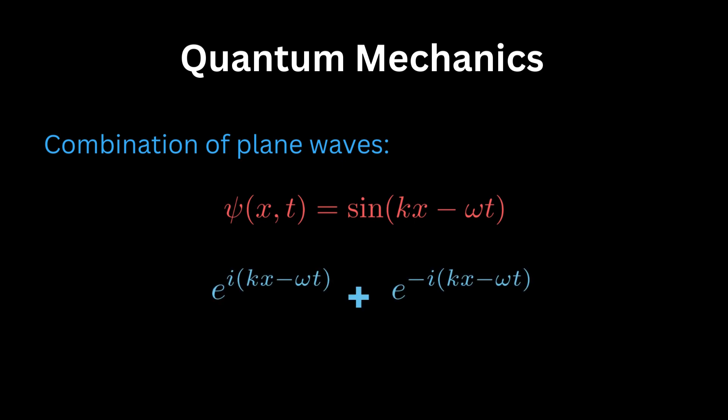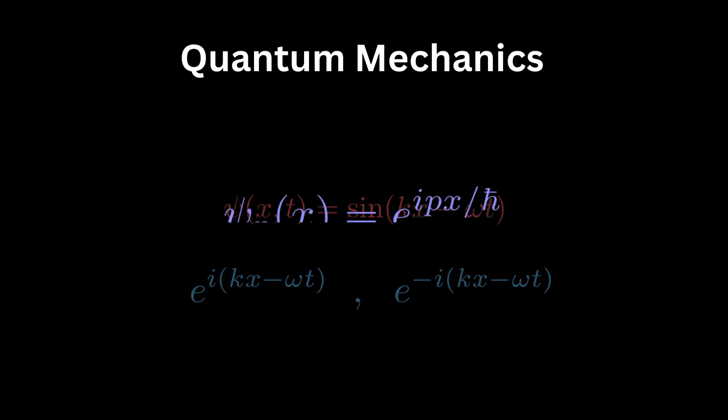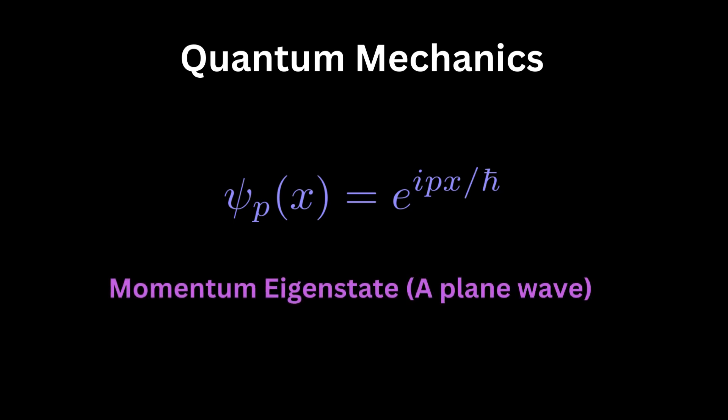In quantum mechanics, to describe a particle in spatial space, we add a large number of plane waves. A sine wave is a wave that can actually be written as, where i is the imaginary number, root of minus one. Each of these plane waves has a perfectly defined momentum and wavelength, so we'll call it a momentum state. And in quantum mechanics it's called a momentum eigenstate. The word eigen from German means its own.